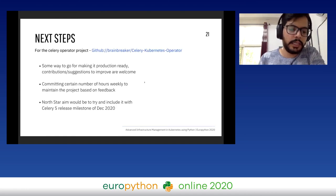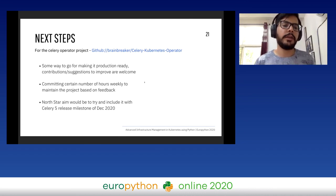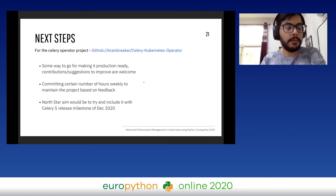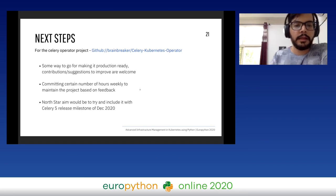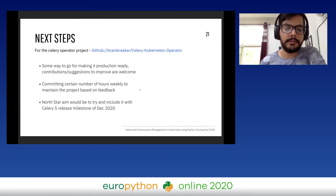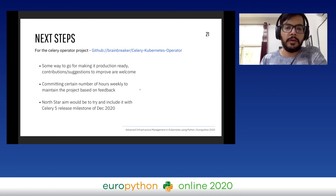Next steps for this project: I wanted to learn about operators in general, so I created this project, which is live and open source on my GitHub. There's still some way to go for making it production ready. If you're running Celery or Kubernetes on production, you're more than welcome to suggest improvements. I'll be committing certain hours weekly based on feedback from this and other conferences. The long-term aim for this operator could be to include it with a Celery 5 release milestone — I'm yet to discuss it with the Celery maintainers, and there's an ongoing discussion on the Celery Enhancement Proposals repo around having a Helm chart or an operator for Celery.